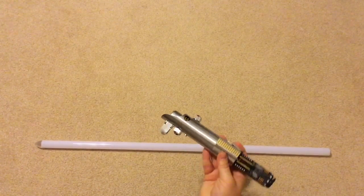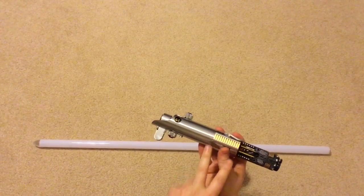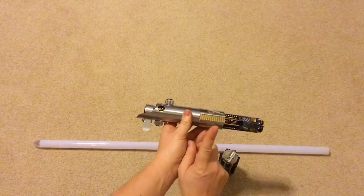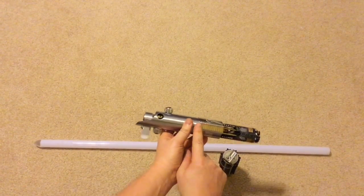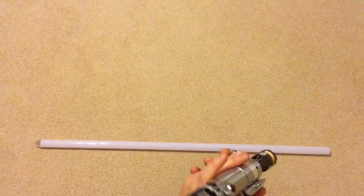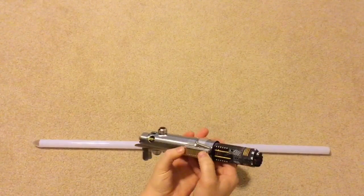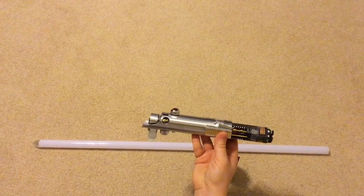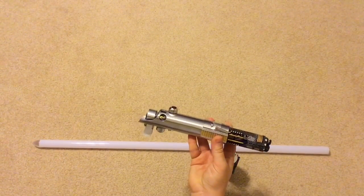And so the reason I did that is because this activation clamp actually has the two micro switches in it. So there's a micro switch at the top here for activation, and then there's a micro switch at the bottom for the alternate button, for the alt functions on the board.